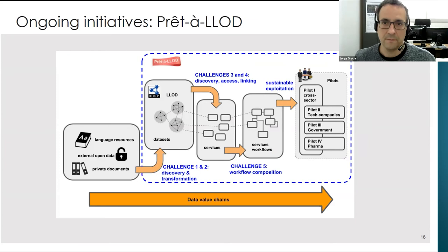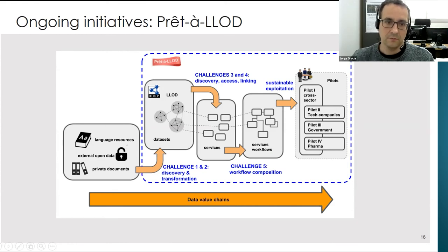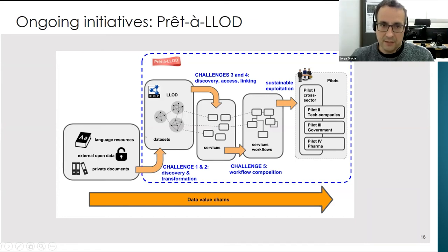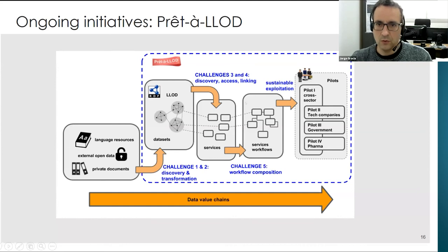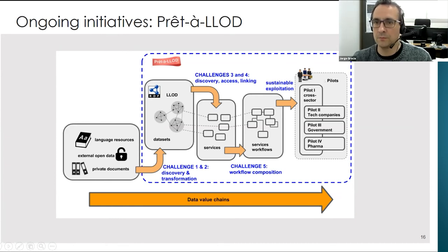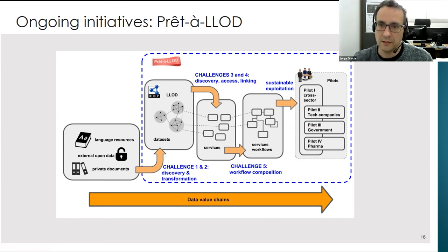The data value chain of the project is to take language resources — disconnected, open, and closed data from different sources — and convert and transform them into linked data, then link them together. A number of services built on top of this linked data can be composed through workflows to support practical applications. The project has several pilots running, from e-government to pharmacy and technology companies.